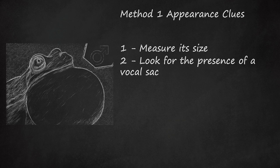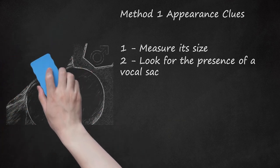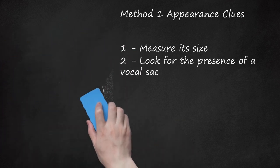This sac can inflate full of air like a balloon when the frog croaks. When the frog isn't croaking, the deflated sac may make the skin on the throat seem more thin and baggy than on female frogs. In addition, the skin of the vocal sac will often be a different color than the rest of the underside. Yellowish or black shades are common.